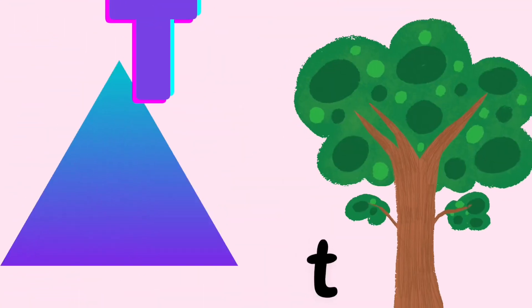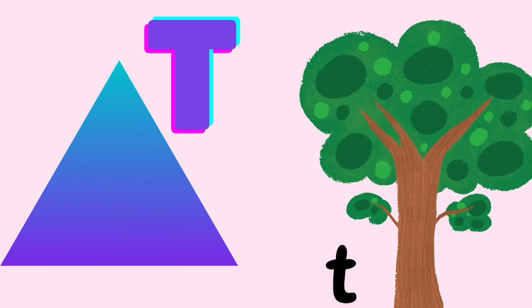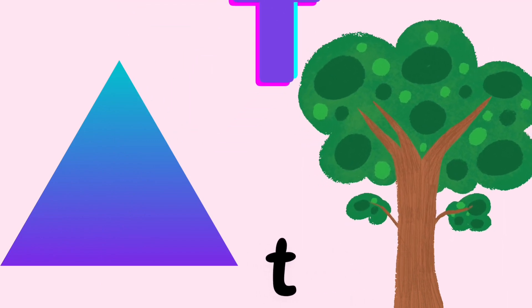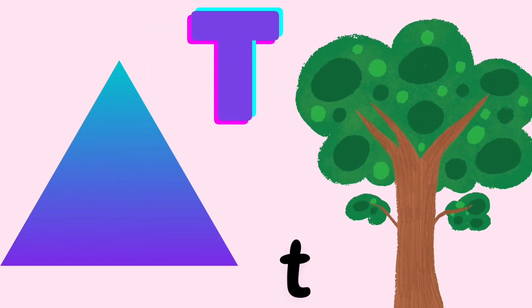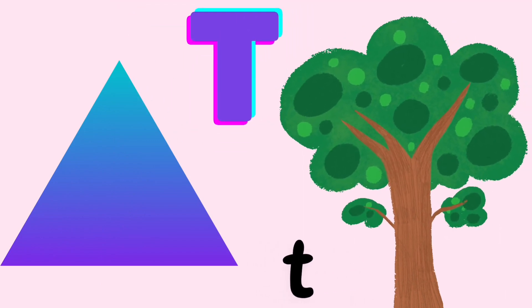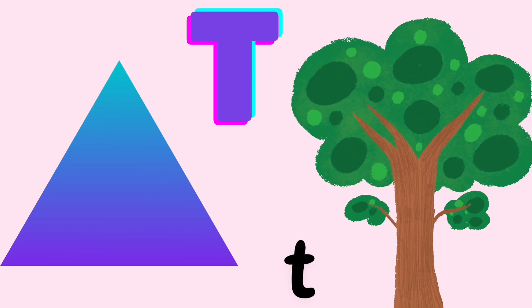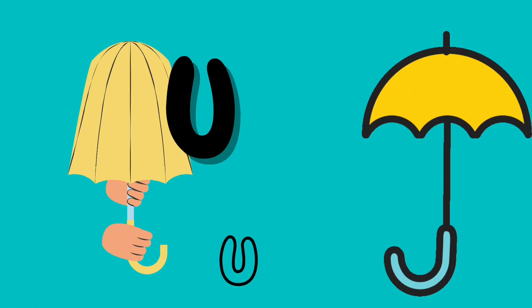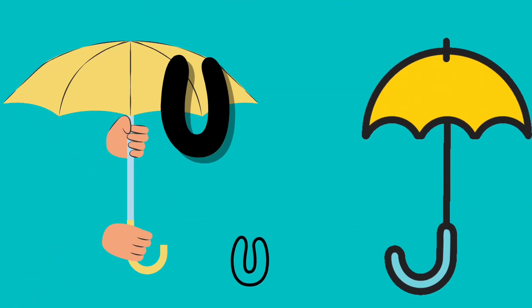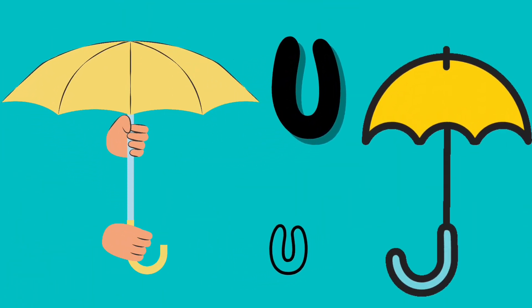S is for Socks — Socks, Socks, Socks. S is for Snake. T is for Tree — Tree, Tree, Tree.